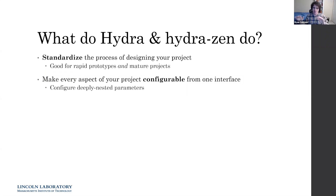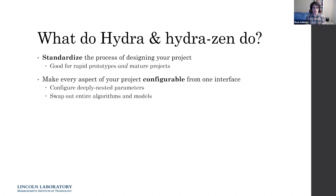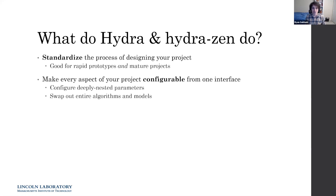For example, in a machine learning project, you might have an algorithm that contains a model, which contains a layer and a specific parameter you want to configure. You want to be able to tunnel down and configure that specific parameter from the interface. You also want to identify entire components of your program that you want to make configurable and swappable — for instance, swapping dataset A for dataset B, or a baseline algorithm for an improved one.